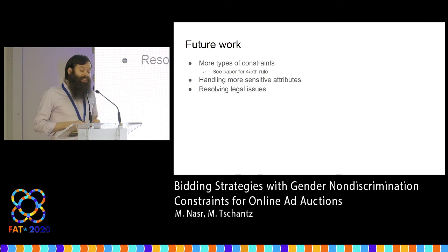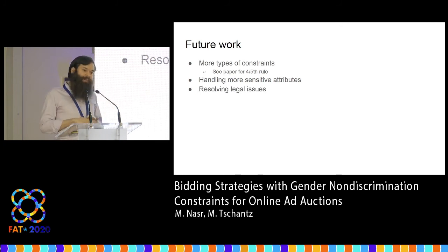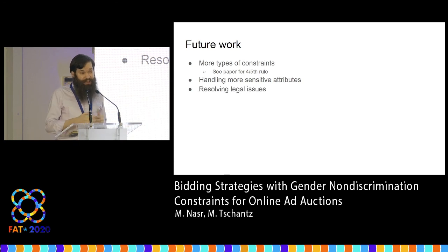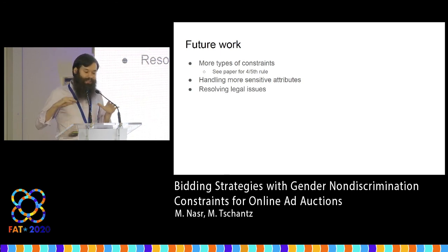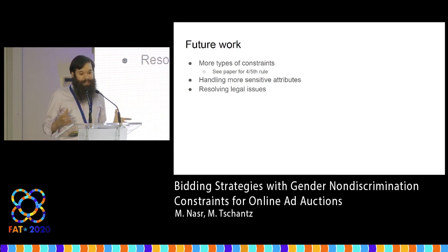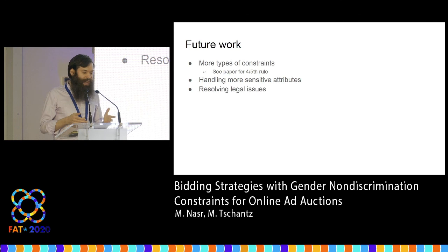We would also like to handle more kinds of sensitive attributes. Our method can already handle a non-binary notion of gender, presuming ad platforms could share that information with us, and it can handle multiple sensitive attributes. But doing these things increases the size of our MDP, so there's a trade-off in terms of time complexity.